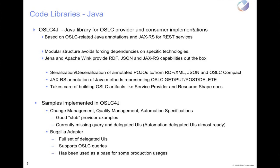The idea behind OSLC4J is that it helps you create Java representations of OSLC resources — things like change requests from the change management spec, or test plans, test cases, and test scripts from the quality management spec. It then provides assistance with going from the Java object to the on-the-wire representation — the RDF XML or the JSON representation of those resources. That was a pretty heavy burden before any toolkits like this existed.